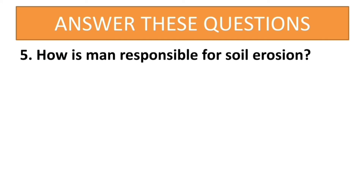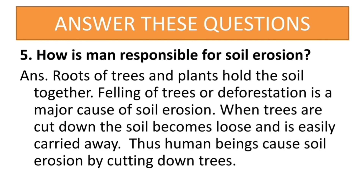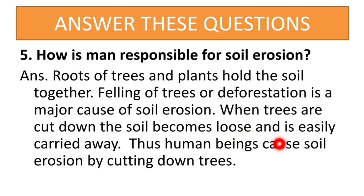How is man responsible for soil erosion? Roots of trees and plants hold the soil together. Felling of trees or deforestation is a major cause of soil erosion. When trees are cut down, the soil becomes loose and is easily carried away. Thus human beings cause soil erosion by cutting down trees.